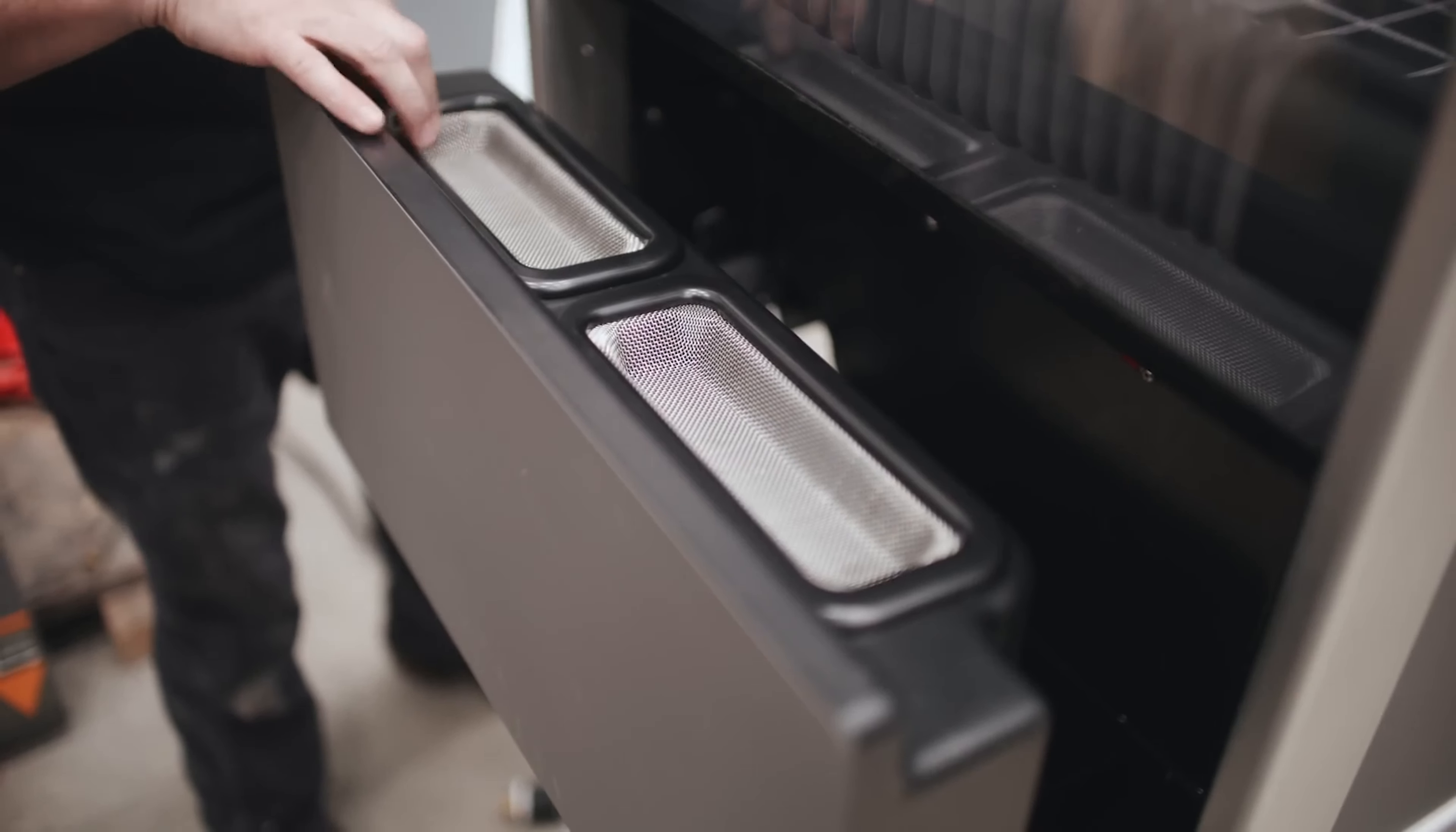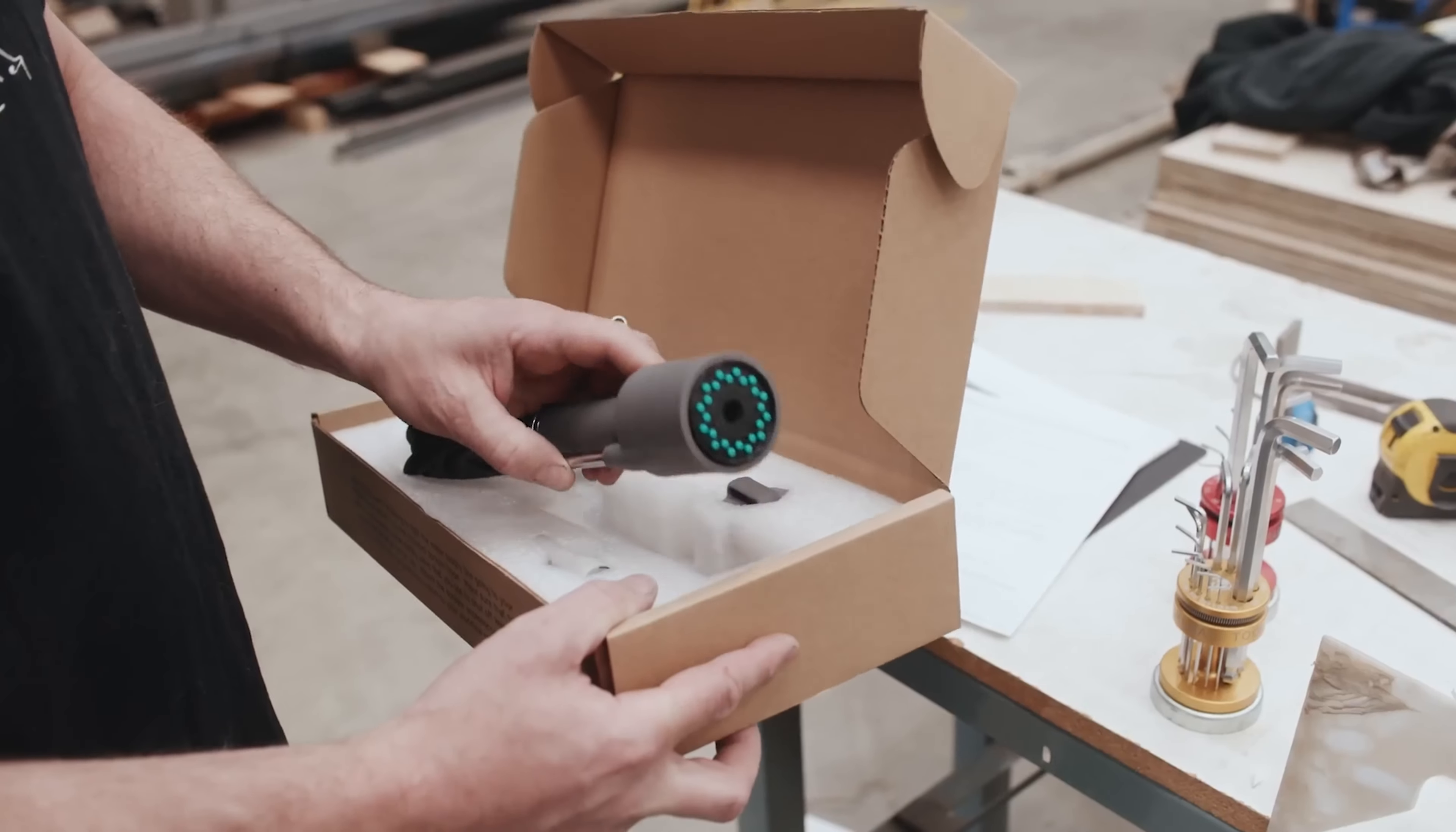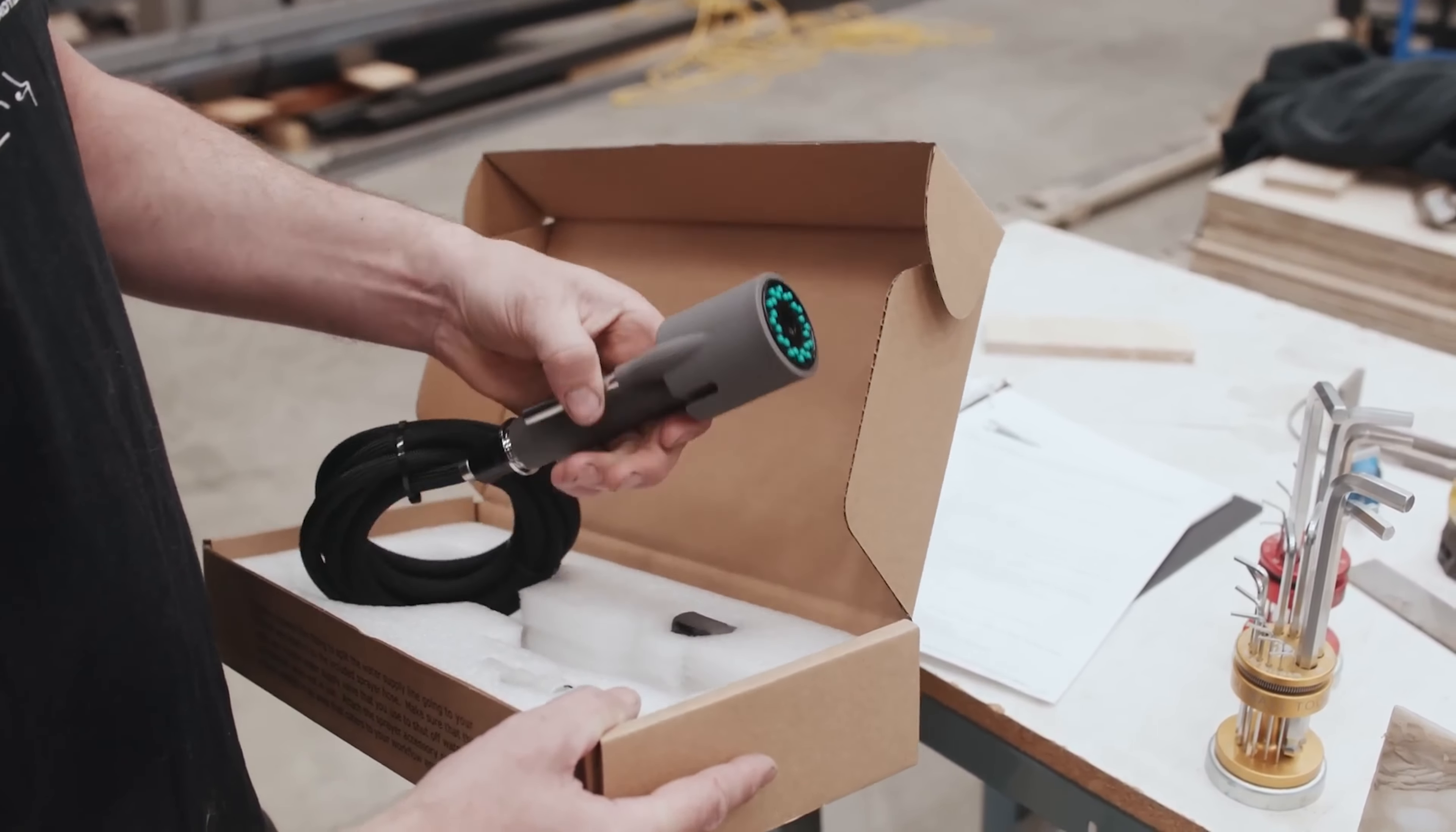I noticed that the garnet hopper is bigger than the previous version. This is gonna give us longer cutting times and it looks like they've included a sprayer for the front of the machine.